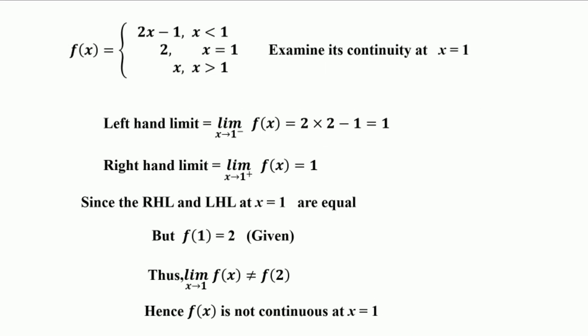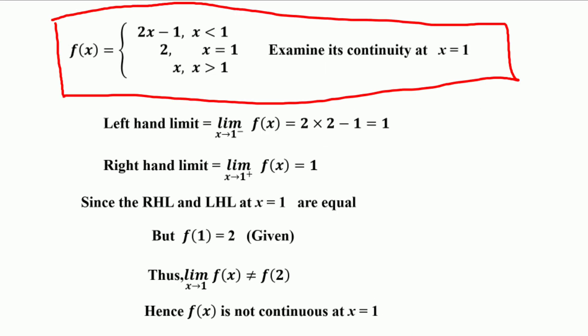Consider the function: f(x) = 2x − 1 when x < 1, f(x) = 2 when x = 1, and f(x) = x when x > 1. Examine its continuity at x = 1.